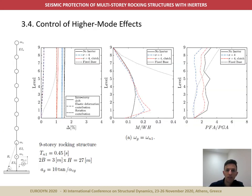When subjected to lateral excitations, the moment that can develop at the base of a rocking system is limited by the uplift threshold. However, bending moments above the base and shears throughout the structure can increase significantly after base uplift due to the response of higher modes. This was examined considering a nine-story rocking structure connected to an inertor at the first level. The influence of higher modes is evident in the bending moment envelope shown in the middle, as the highest demands are obtained around the third and fourth levels. The approximately uniform distribution of accelerations along the building height indicates demands related to high-frequency vibrations associated with impact. The introduction of inertors helps control the high-frequency response, causing an appreciable reduction of horizontal acceleration demands and an approximately linear vertical decrease of the bending moments from the critical section at the first level, although it also increases bending moments at this point due to the backstay effect.